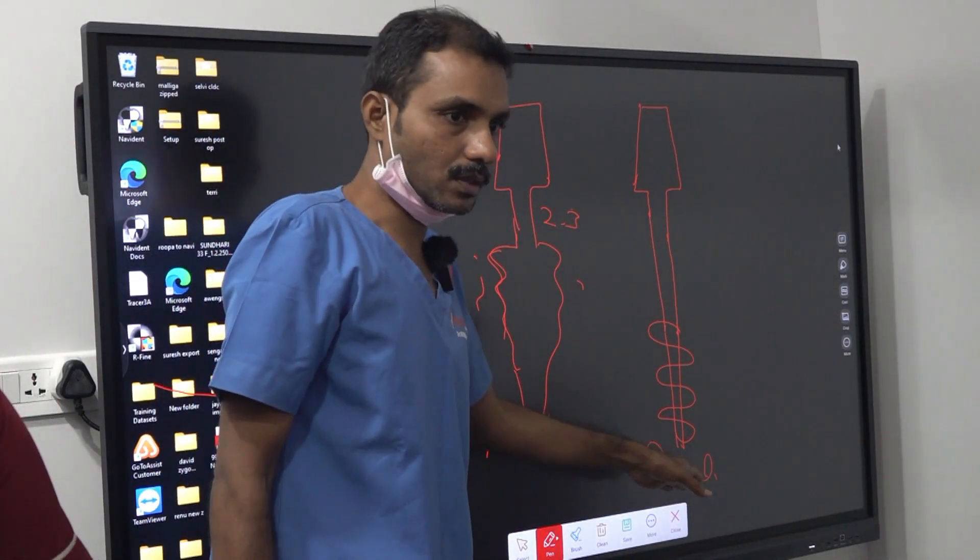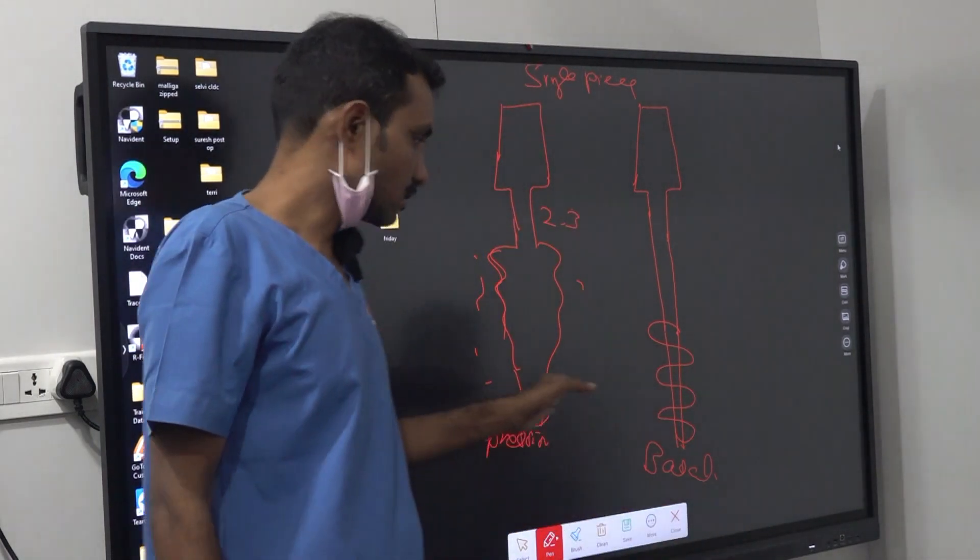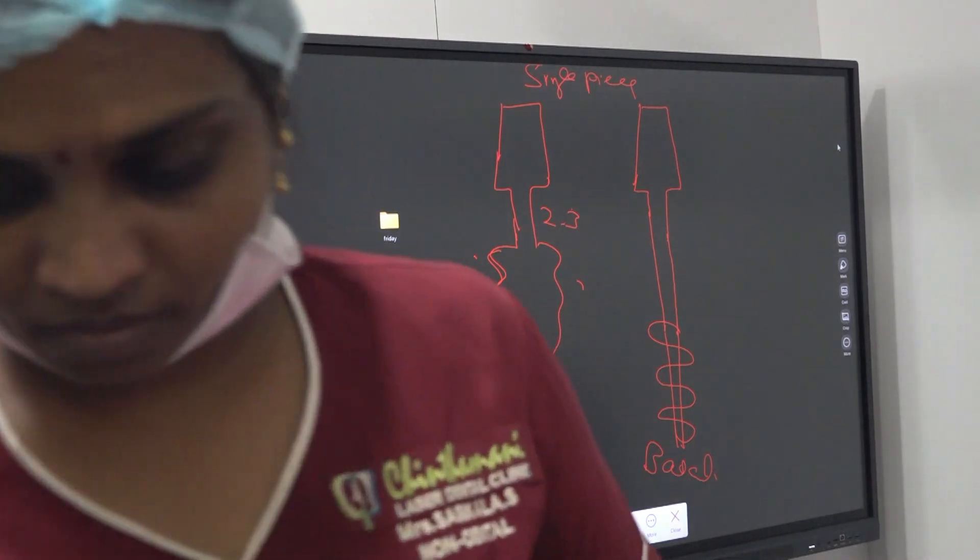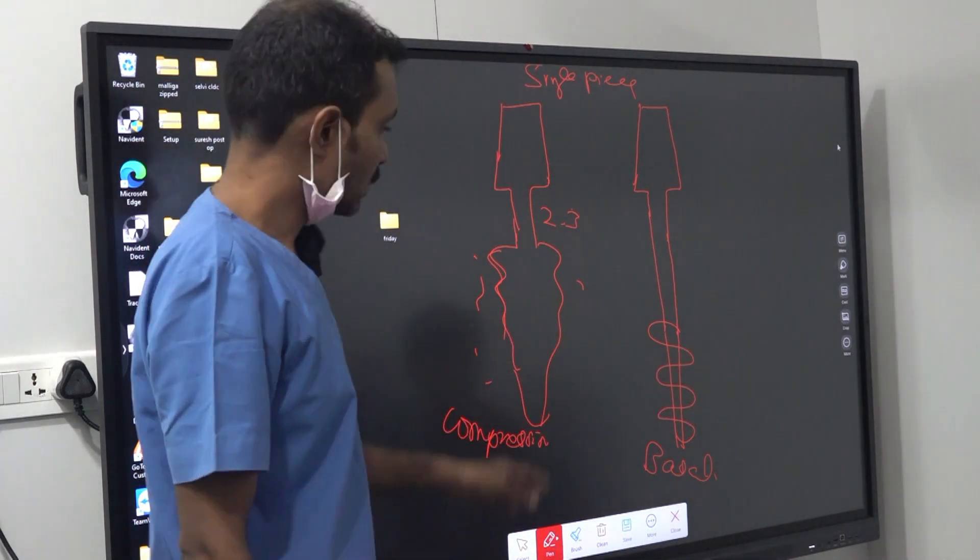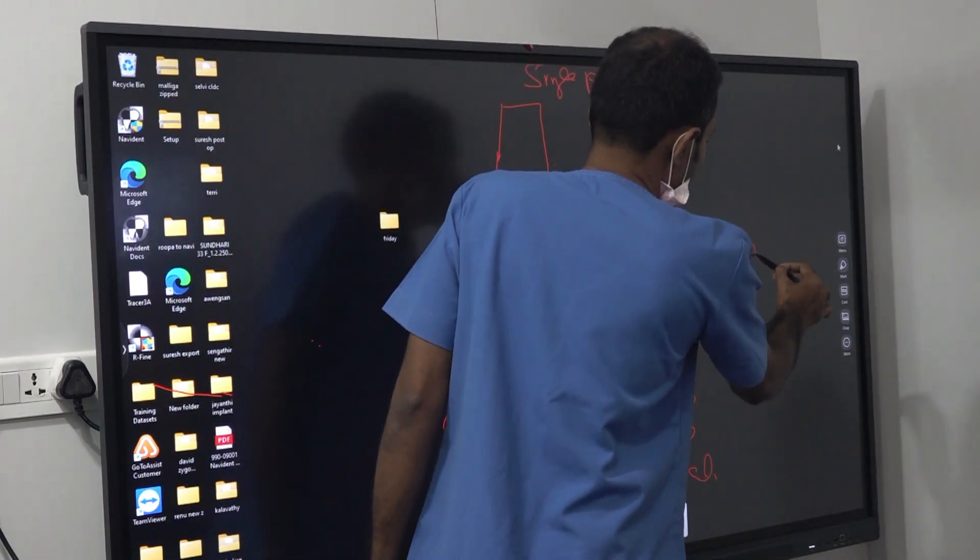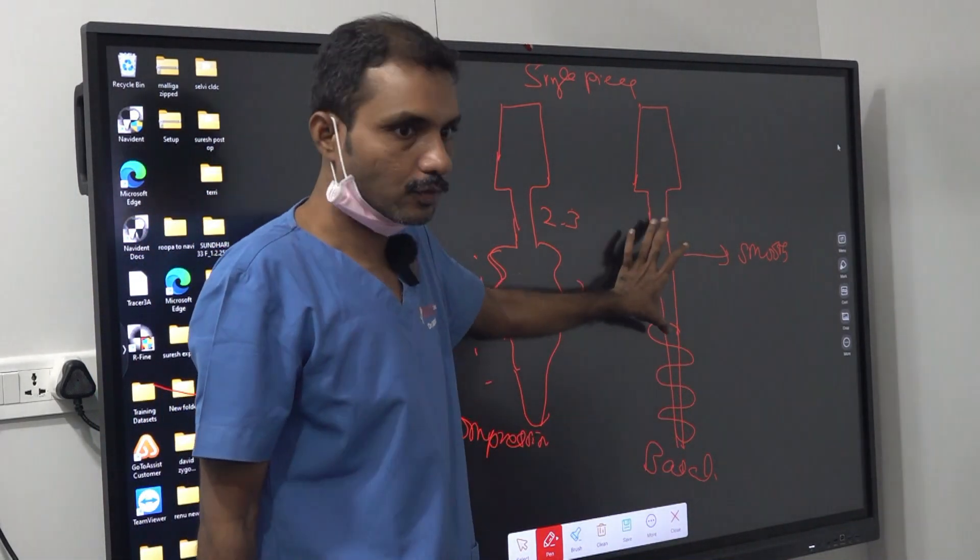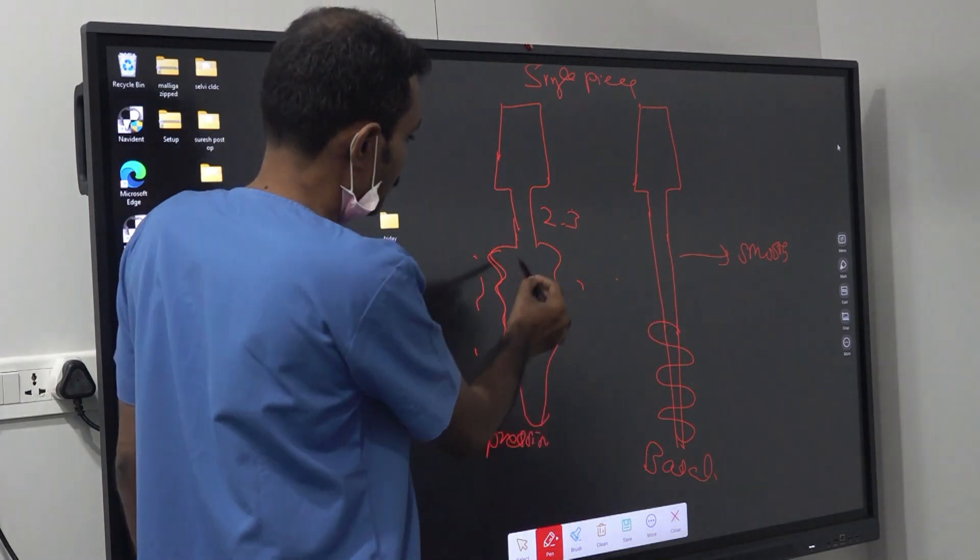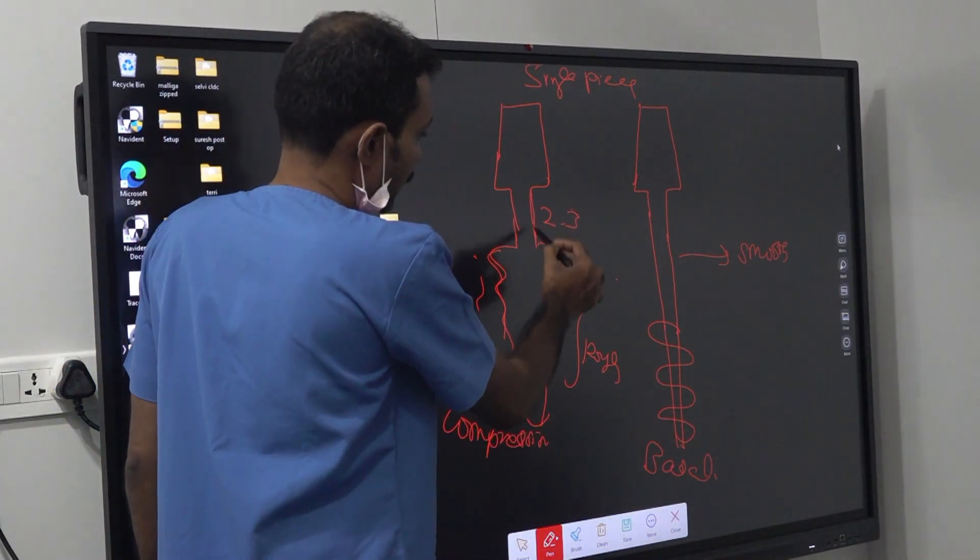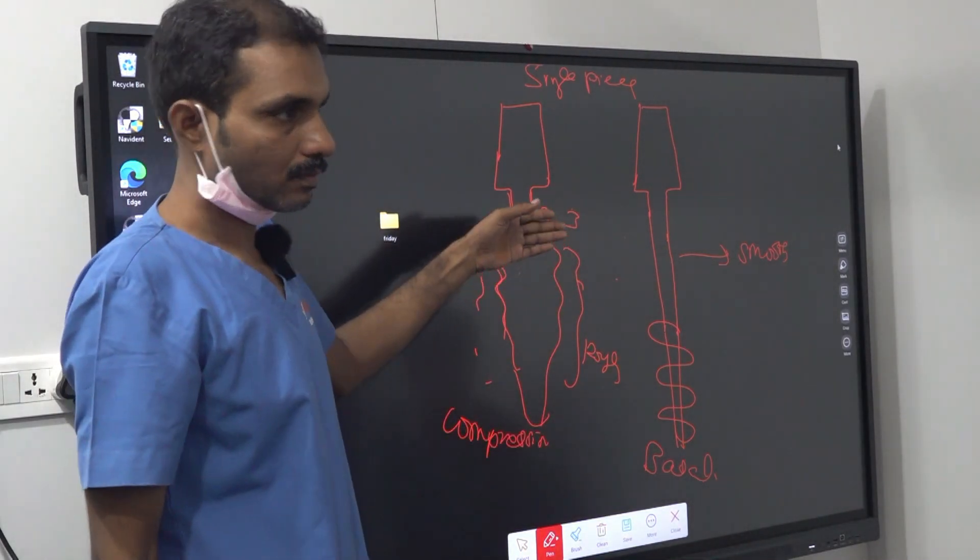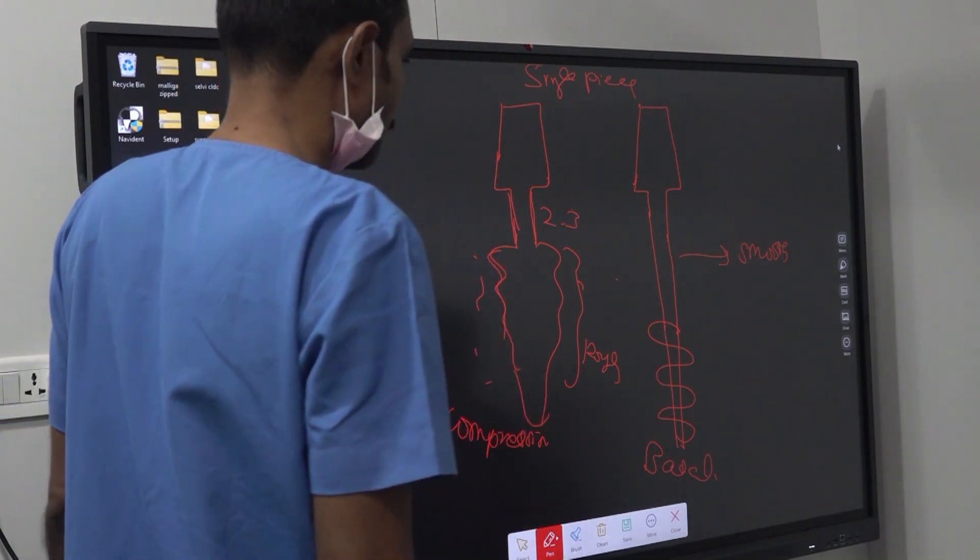This is the basal implant actually. So this is the problem in terminology - both are called single piece, but only this design is the basal design, this is not basal design. But usually we tell basal implant, basal implant - not all are basal implant. This is the classic basal design. So this is the compression implant, this is smooth surface, everything is smooth surface here, threads only near the apex, this part left fully open, only shanked. But here, this part is the rough surface, similar to conventional implant. This is the neck part, that is the smooth surface, because that is going to be in the gums, not into the bone. So these are the two main designs.